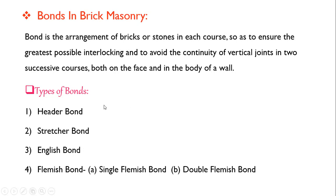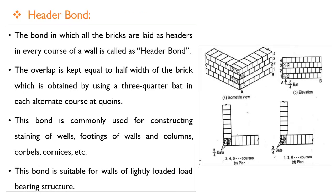There are different types of bonds: header bond, stretcher bond, English bond, and Flemish bond. Under Flemish bond there are two further types: single Flemish bond and double Flemish bond.